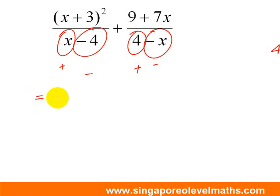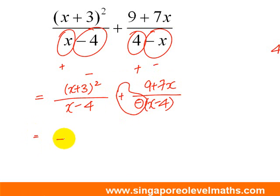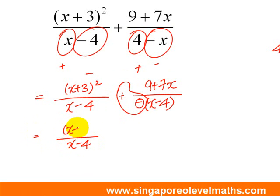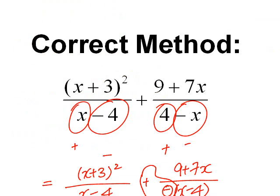So the next thing we can do is: for the first fraction, we don't have to do anything — just copy it down. The second fraction is the part where we need to do some work. I'm going to change 4 minus x into minus bracket x minus 4. The numerator stays as it is. Then you combine the two signs, and right now it becomes: x minus 4 in the denominator, and the numerator is x plus 3 squared, minus the quantity 9 plus 7x. Hooray! Both denominators are now the same — this is one of the very important things you must do before adding or subtracting two algebraic fractions: ensure they have a common denominator.